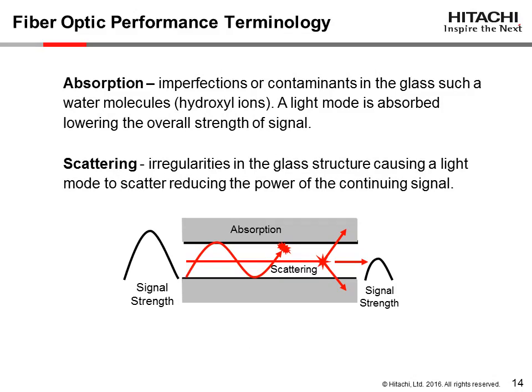Absorption is caused by imperfections or contaminants in the glass, such as a water molecule. A light mode is absorbed, lowering the overall strength of the signal. Scattering is caused by irregularities in the glass structure, such as a microscopic density fluctuation in the glass. A light mode is scattered, reducing the power of the continuing signal.